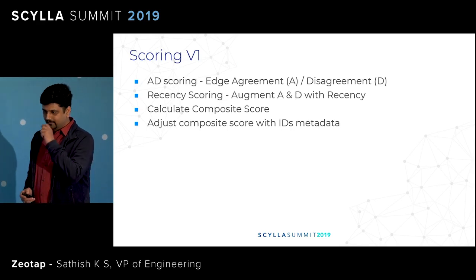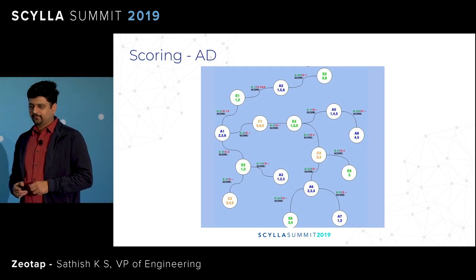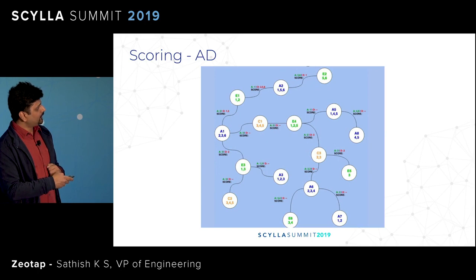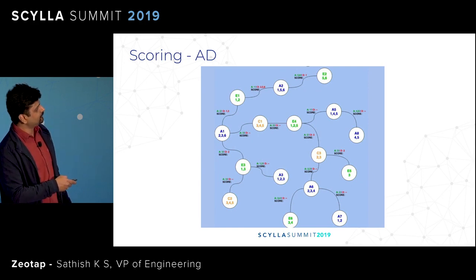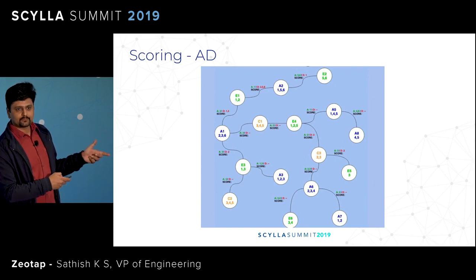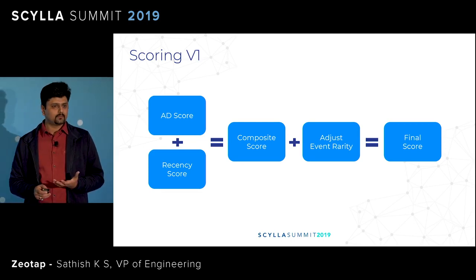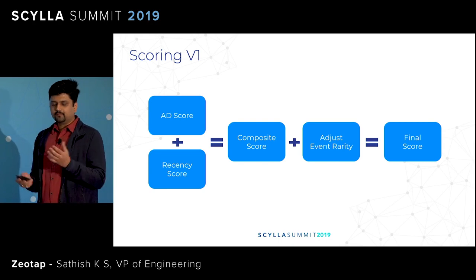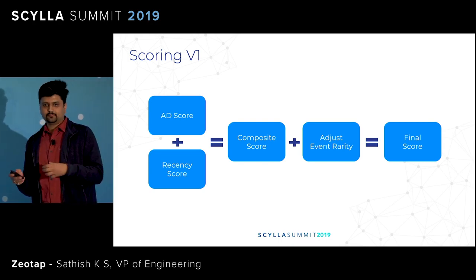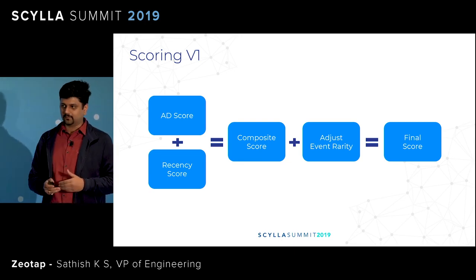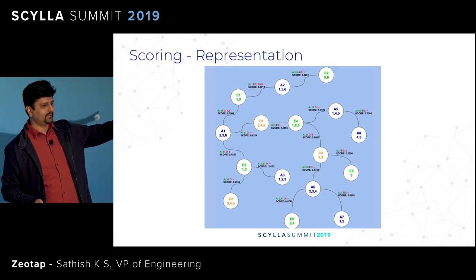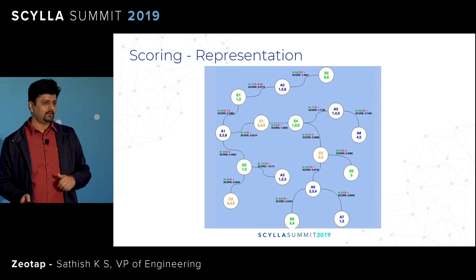It all starts with the AD scoring for every edge. AD means agreement and disagreement score. For example, ID A2 is linked to ID E2. The common data partners on this edge are 5 and 6, and the uncommon data partner which does not agree with this existence is 1. So we say the agreement score of this edge is 2 and the disagreement score is 1. We augment the AD score with the recency score such that the most recent edges get a higher score, giving us a composite score. On top of that, we augment the composite score with vertex metadata: if the connected vertices have similar IP subnets, we boost the composite score; if the device operating system is different for the connected vertices, we penalize the composite score. This leads to a final score stored as edge metadata, which is then used by the match test traversal as a ranking problem.